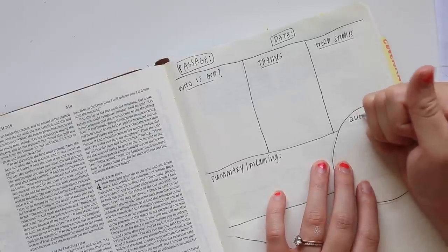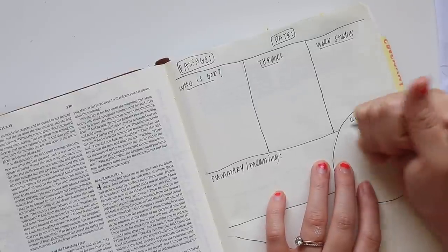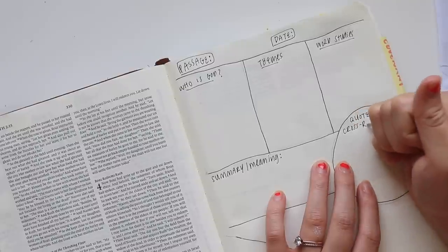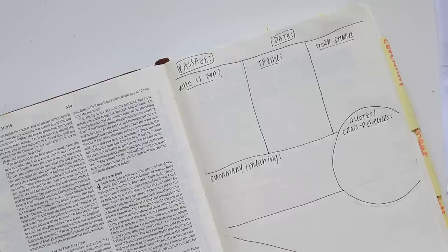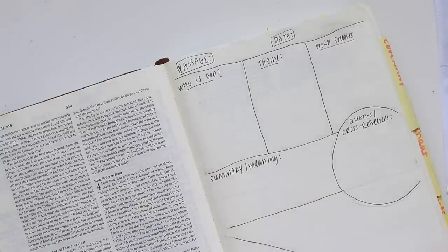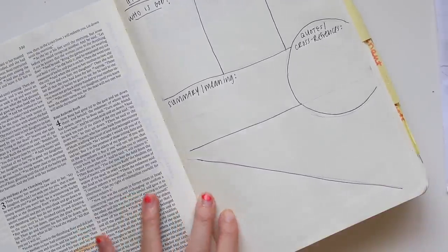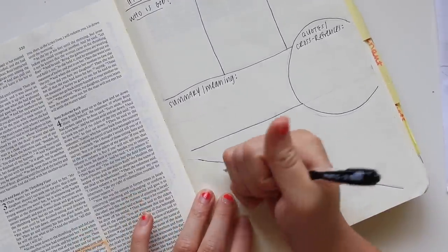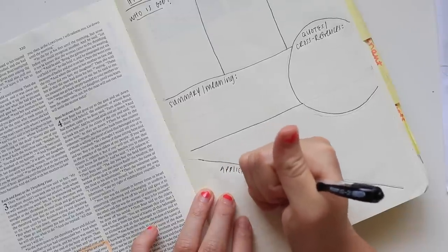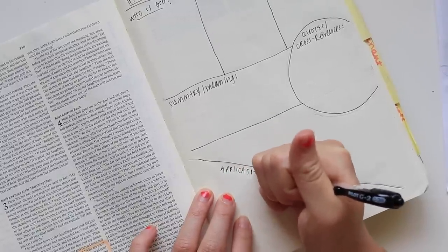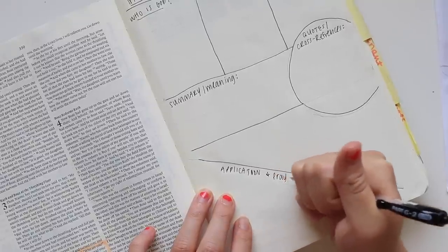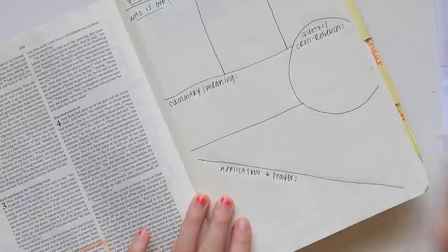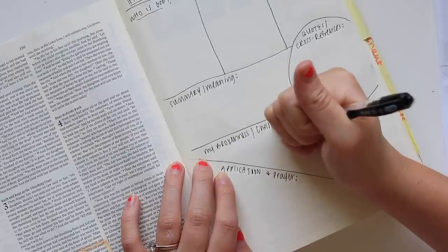The second thing I wrote down here were themes - what were major themes that were sticking out in this passage? Third, word studies - are there any words that I want to look into more, that I want to look up in my Greek and Hebrew lexicon?